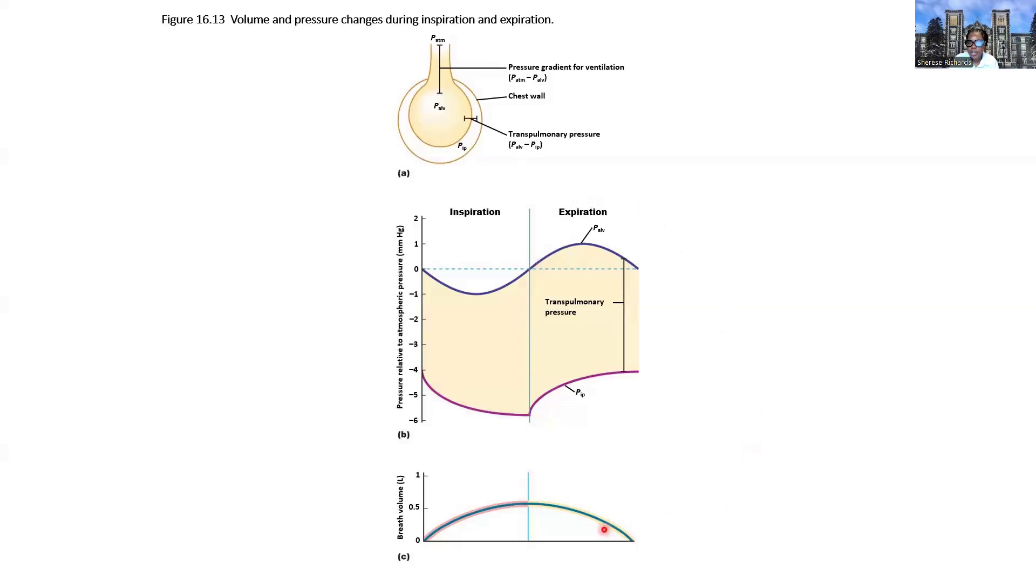And then during expiration, we see the opposite. There's a rise in intra-alveolar pressure because of a drop in the volume because of a contraction of those muscles. Well, relaxation for the diaphragm, which causes a contraction of the cavity. The cavity gets smaller as the diaphragm relaxes. That results in a rise in intra-alveolar pressure. Boyle's law. These are inversely related. And then that results in a rise in intrapleural pressure.